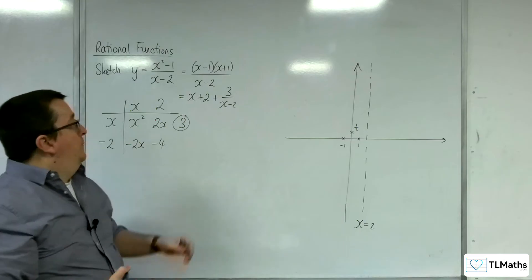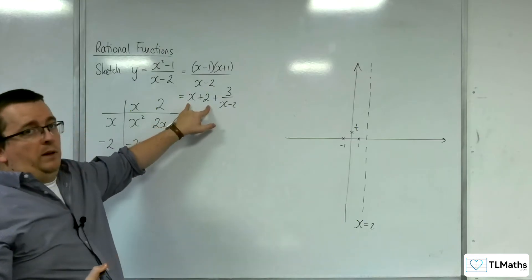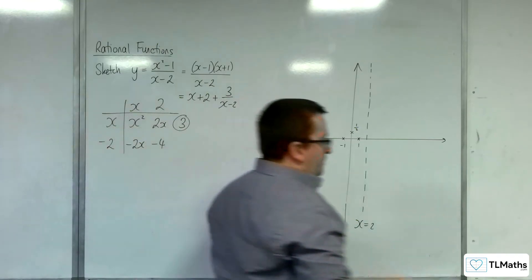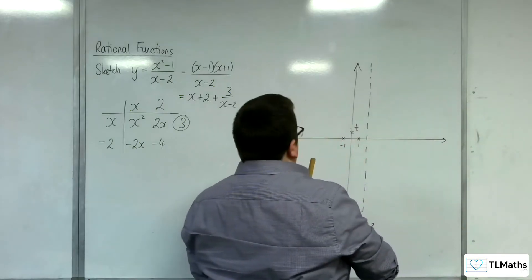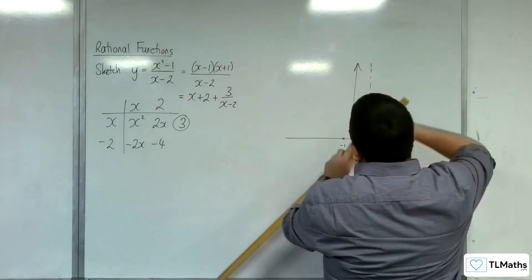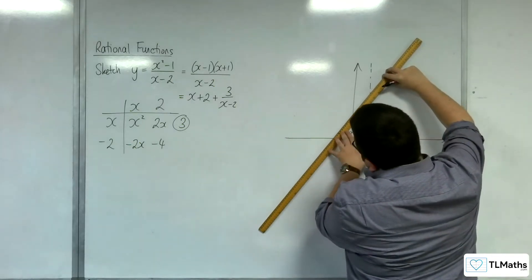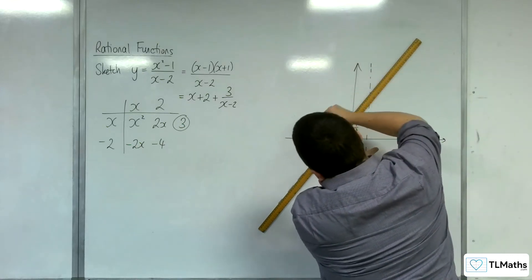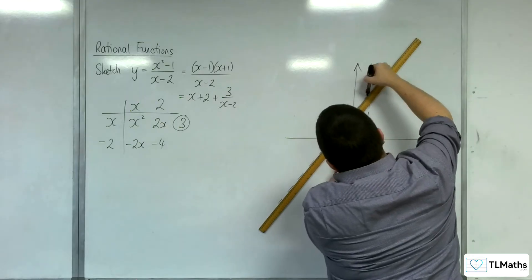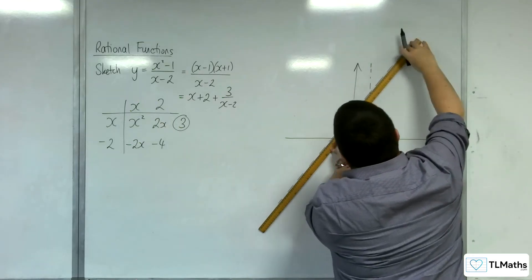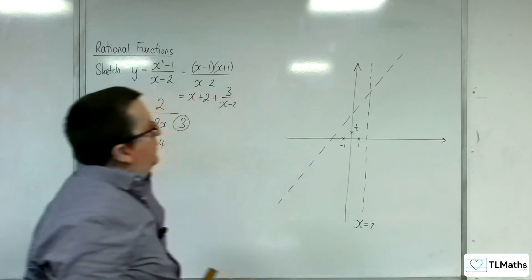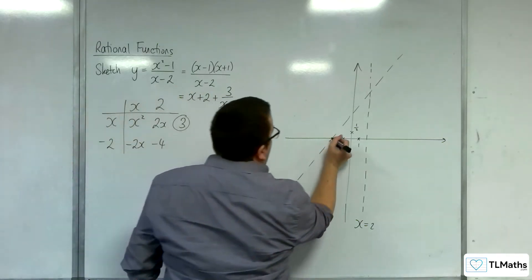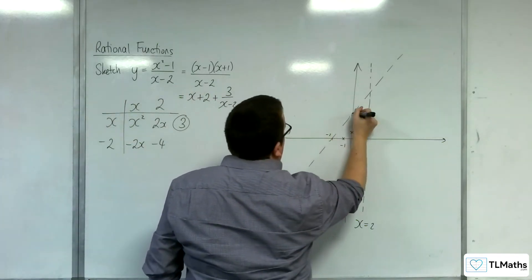So the oblique asymptote is at y equals x plus 2. So there's our y equals x plus 2, so that's at minus 2, and that's at positive 2.